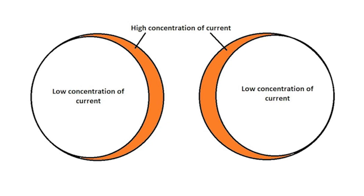Well, when two or more conductors are placed close to each other, their magnetic fields start to interact. This interaction can distort how the current flows through the wires, concentrating in certain areas instead of spreading evenly.